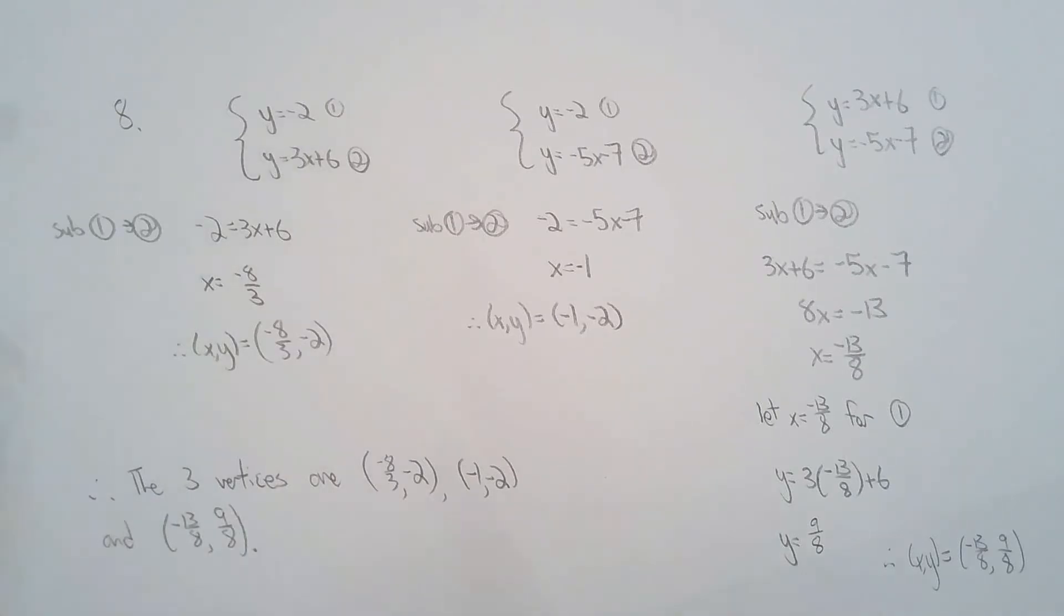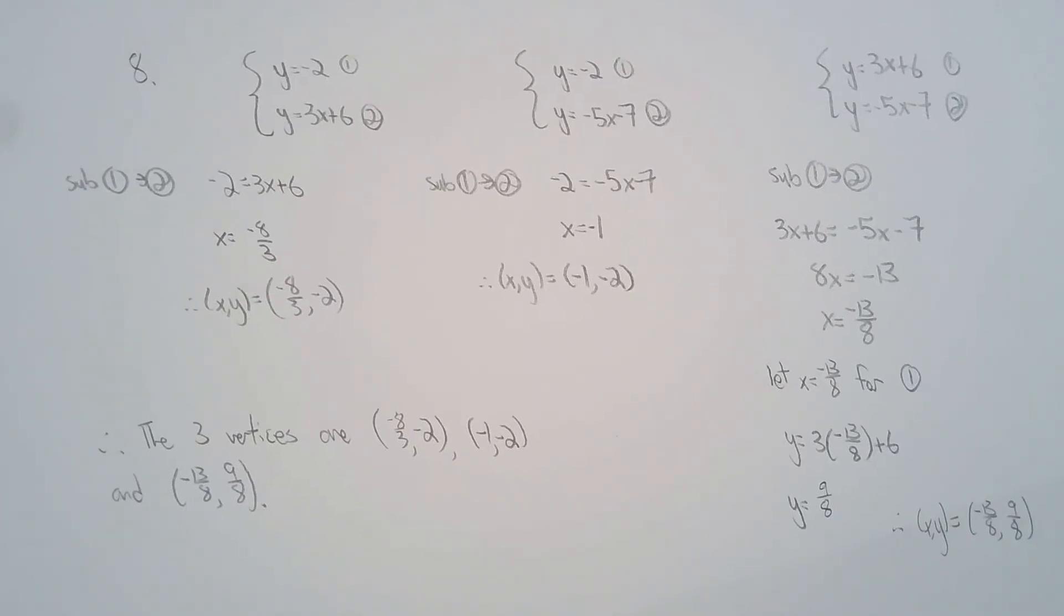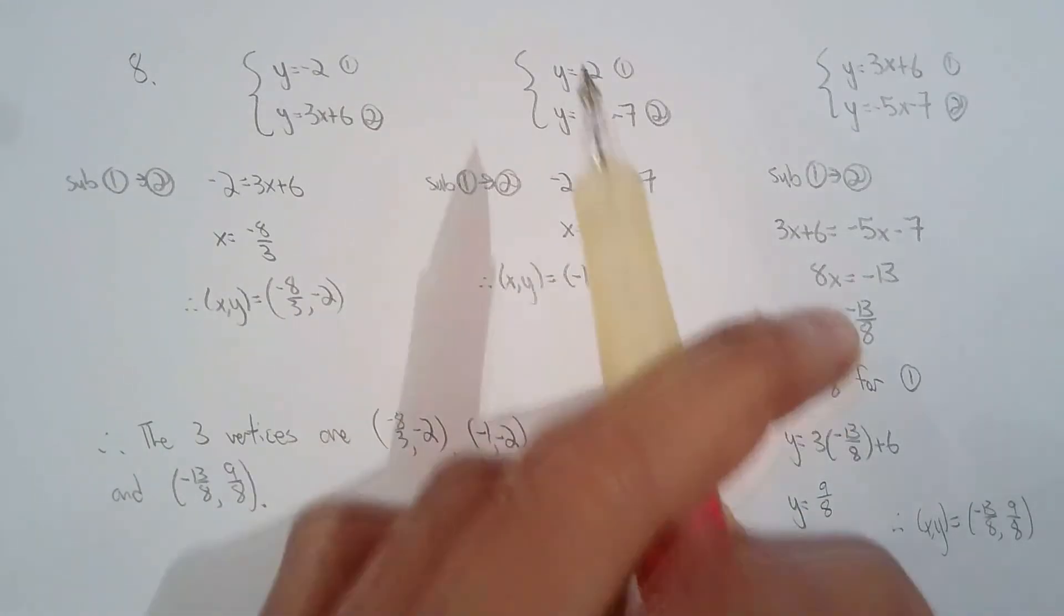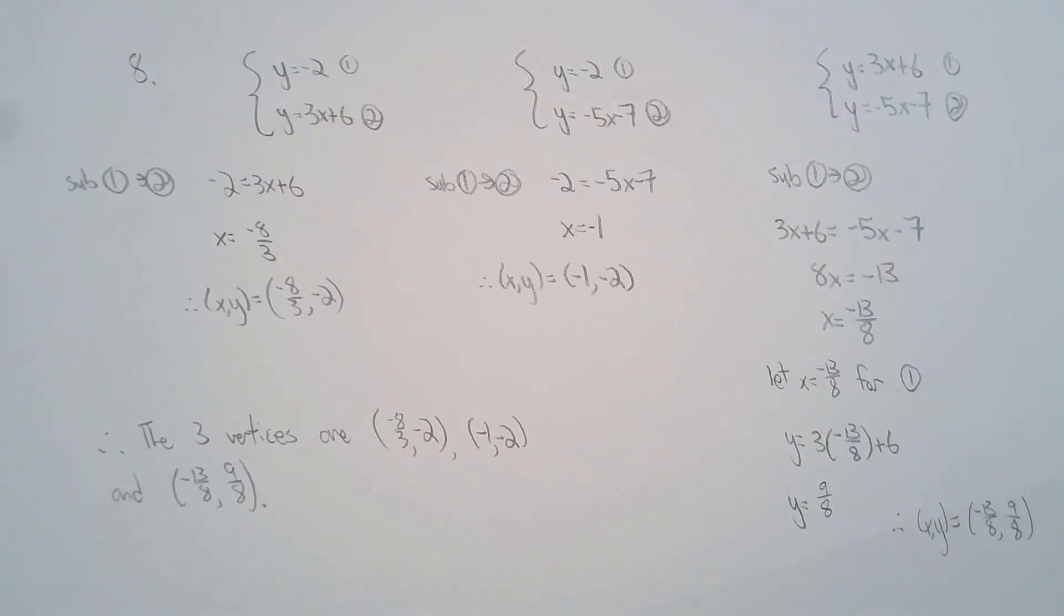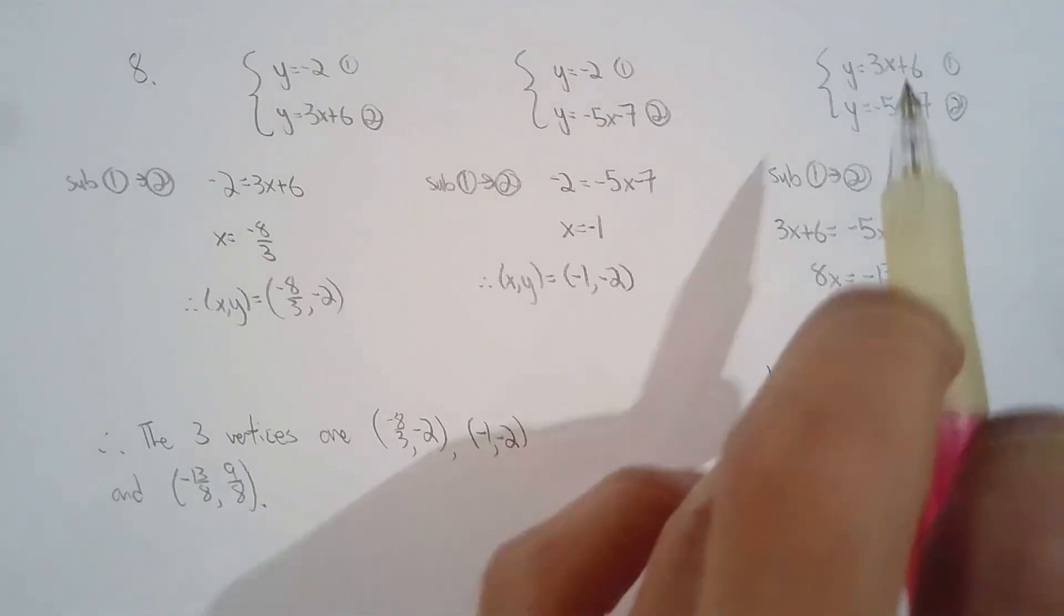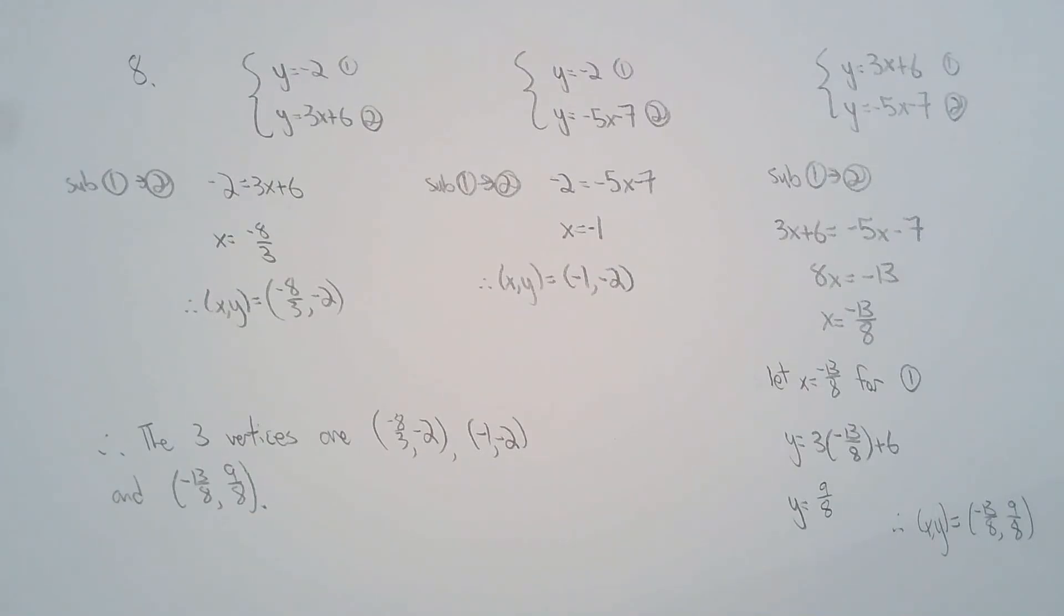Anyways, I solved the three systems and I got the three vertices, the three points that make up the vertices. Really the first two systems I made were very easy to solve because I just had to let y equals negative two. If one of your lines is horizontal, then it makes it very easy to solve that system. The third system was not that bad either. It's both in the form of y equals. So substitution was really straightforward.